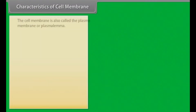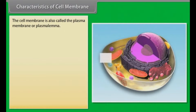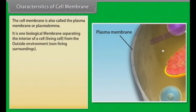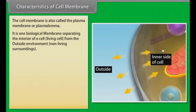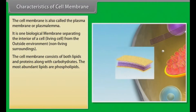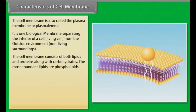Characteristics of cell membrane. The cell membrane is also called the plasma membrane or plasmalemma. It is one biological membrane separating the interior of a cell — that is, the living cell — from the outside environment, that is, non-living surroundings. This cell membrane consists of both lipids and proteins along with carbohydrates. The most abundant lipids are phospholipids.